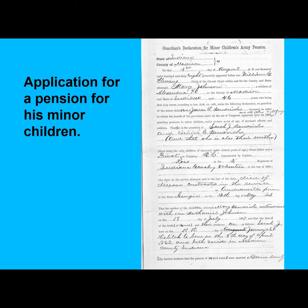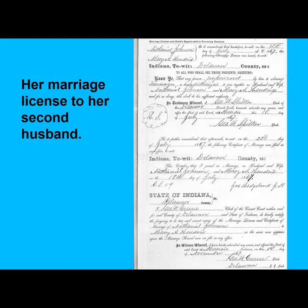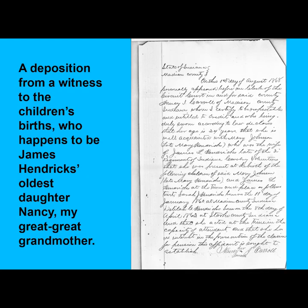In 1868, James' widow, Mary Johnson, applied for a pension for their two minor children, Sarah and Delilah, providing the girls' birth dates. Although Mary had to provide proof of her marriage to James, she was unable to locate an official record, so she got depositions from people who had known her in North Carolina. She also submitted an official record of her second marriage. A document of special interest to me is a deposition by James' oldest daughter, Nancy — my great-great-grandmother.